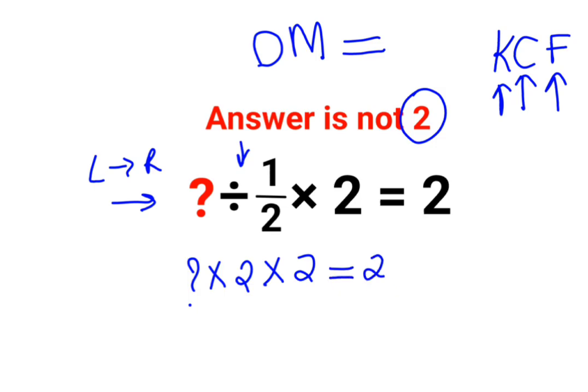Okay. So now we have question mark multiplied by 2 multiplied by 2. That becomes what? 4 times question mark equals to 2.